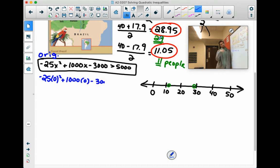Zero times anything is zero. So all this stuff works out to zero plus zero minus 3,000. So negative 3,000 is greater than 5,000. Now is negative 3,000 greater than 5,000? No. So that left chunk is out.